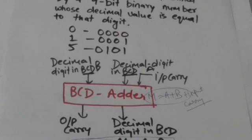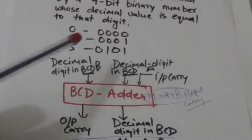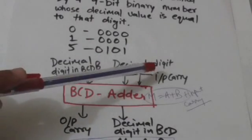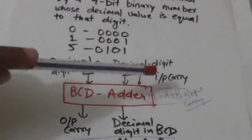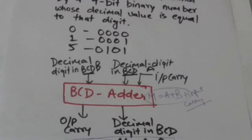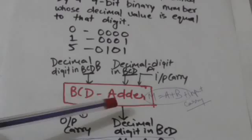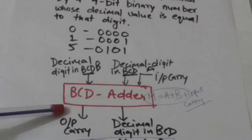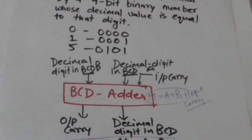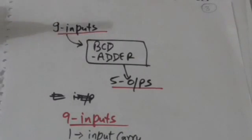Now what this BCD adder does: it takes decimal digits A and B in BCD along with an input carry as input. It adds A, B, and the input carry, and gives the least significant decimal digit of the sum of A, B, and input carry in BCD along with an output carry as output.